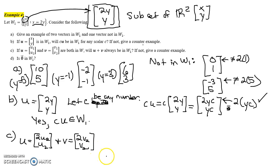So if these are two vectors in W₁, will the sum u plus v necessarily be in W₁? Let's see. u plus v would be [2u₂, u₂] plus [2v₂, v₂]. To add these vectors, we just add the corresponding components. I'm going to fill in the second component first. So we have u₂ plus v₂ here, and then 2u₂ plus 2v₂ here.